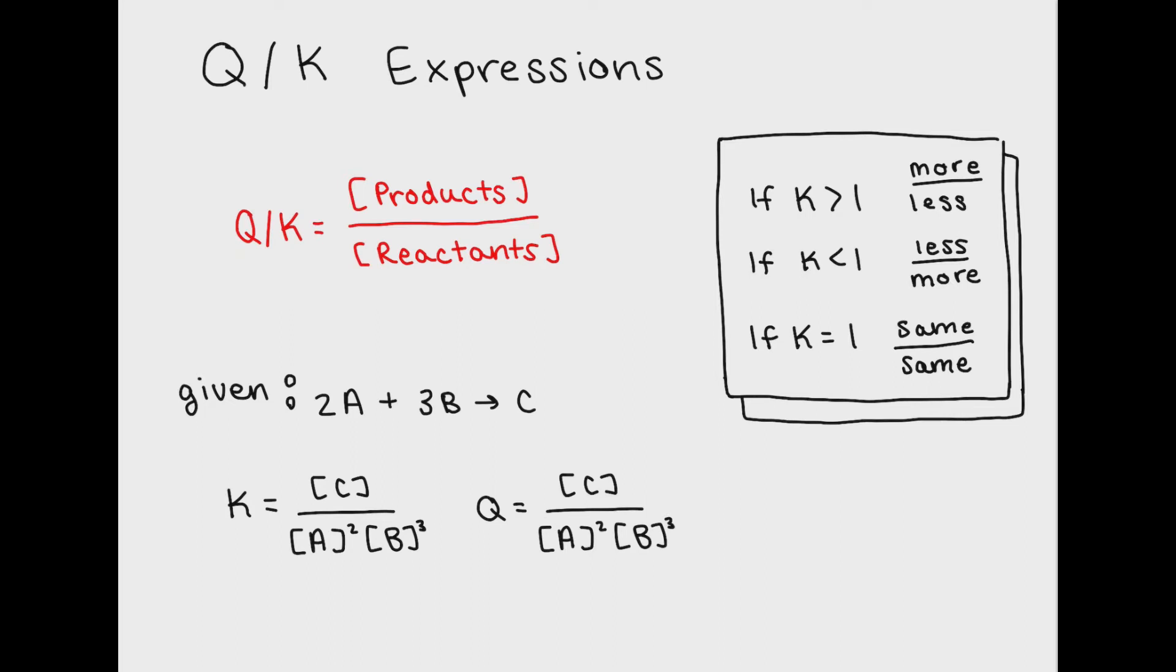So what does a K value really mean? A K value of greater than 1 means that there are more products than reactants. A K value of less than 1 means that there are more reactants than products. This makes sense because a K value of less than 1 would be a fraction. A fraction would have 1 on the top and a number larger than 1 on the bottom. This would mean that the number of products would be 1 and the number of reactants would be larger than 1.